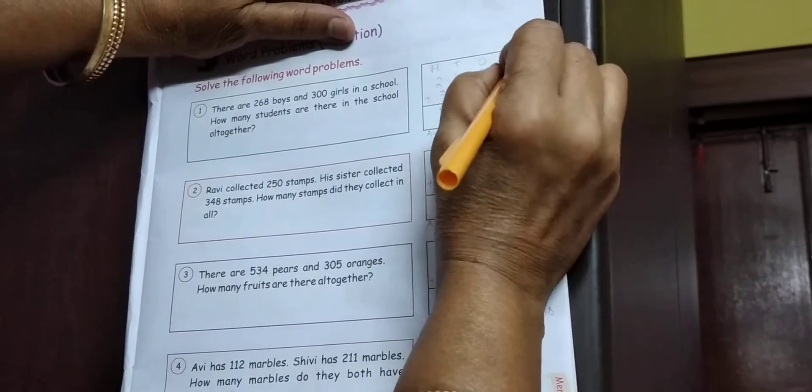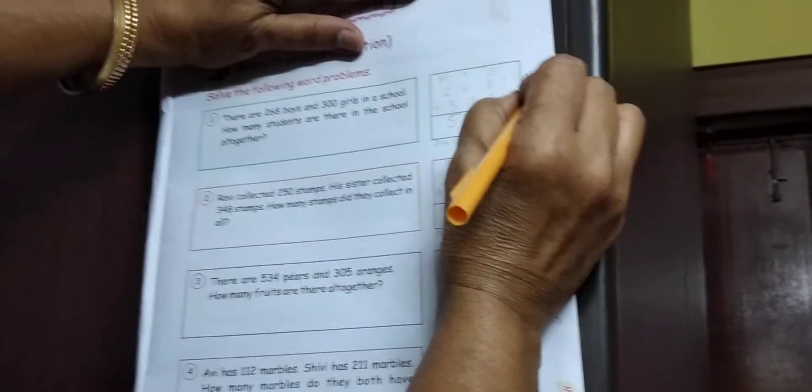Idhar me boys liko. B, O, Y, S. Idhar me girls liko. G, I, R, L, S. Girls.